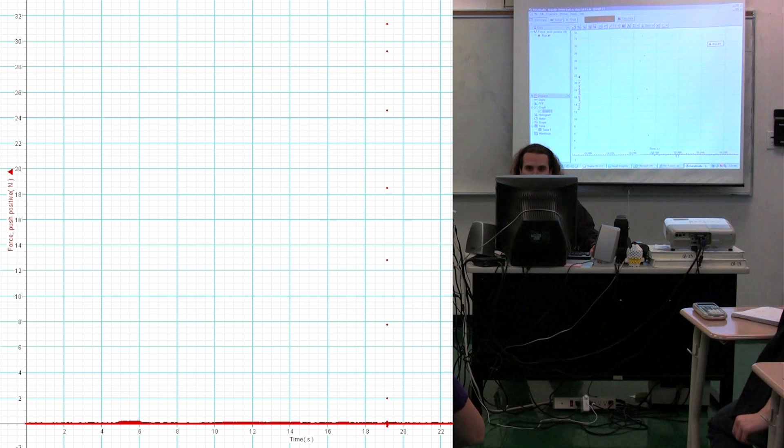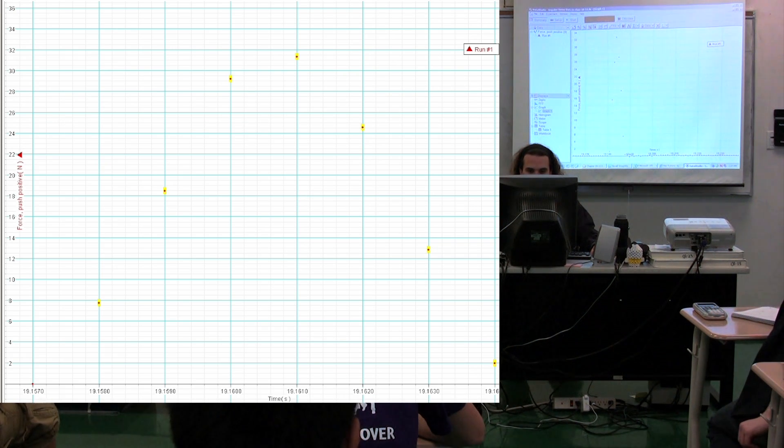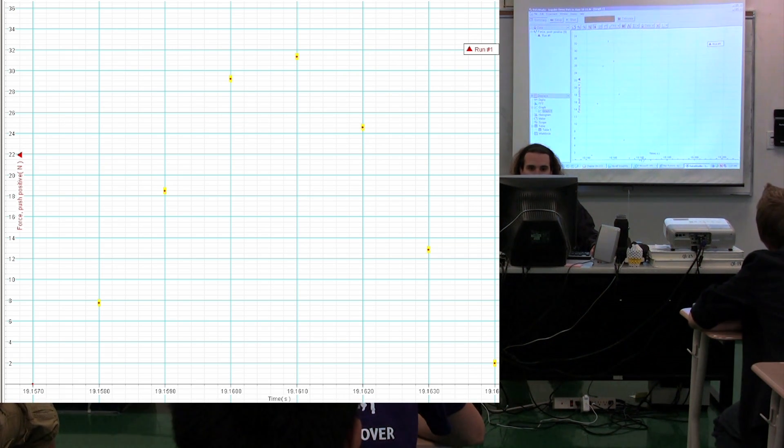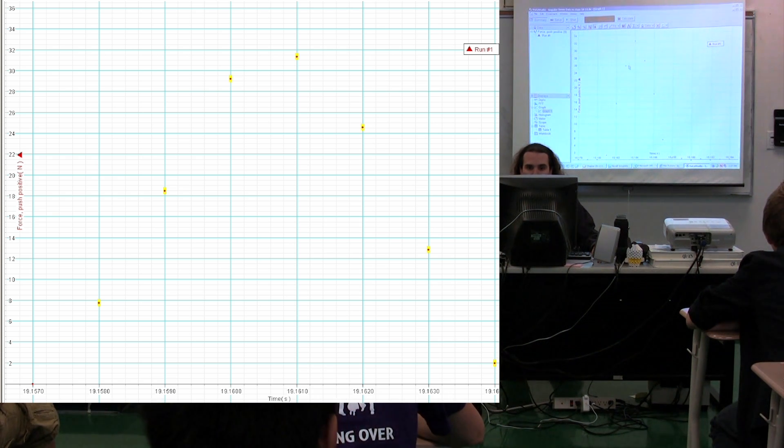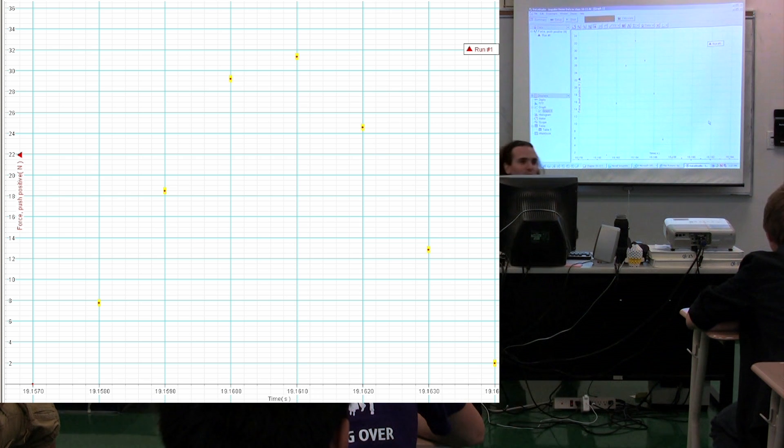So these are our data points. You can see we have one, two, three, four, five, six of them. I will highlight them. Those are our data points.